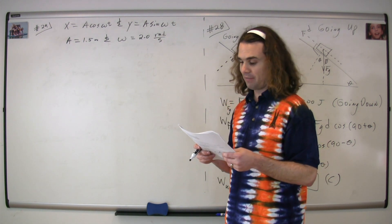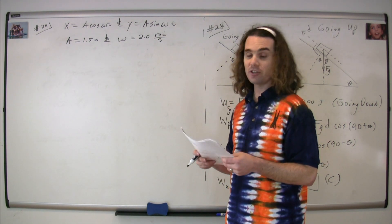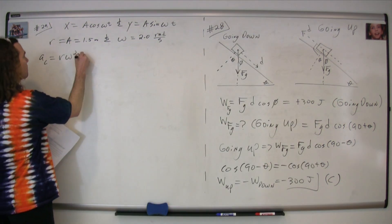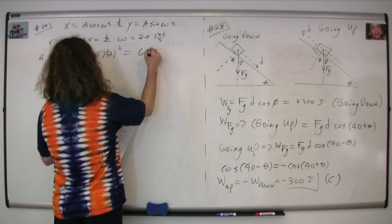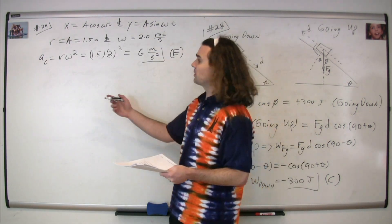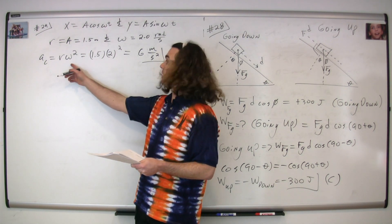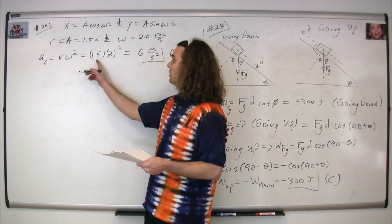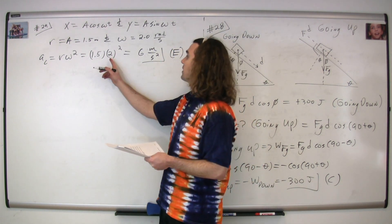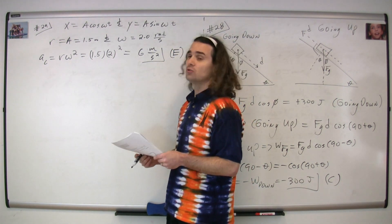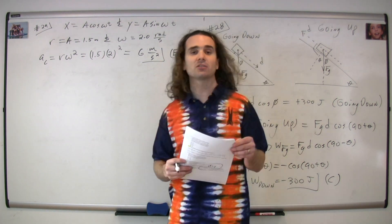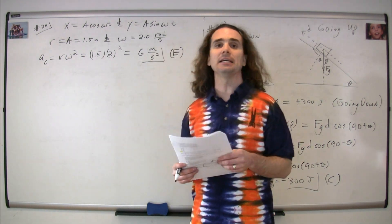So if we're trying to figure out the acceleration, it's a centripetal acceleration. One of our equations for centripetal acceleration is it's equal to the radius times the angular velocity squared. A radius of 1.5 times the angular velocity of 2 squared gives us 6 meters per second squared. The correct answer is E.